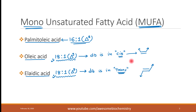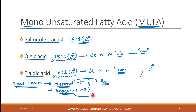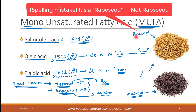Now let's look at the food sources of monounsaturated fatty acids. The richest source is mustard oil. Another source is rapeseed oil. In Hindi, mustard is known as 'rai' — those small black seeds — and rapeseed oil is known as 'sarson'. So mustard is 'rai' and rapeseed is 'sarson' in common Hindi.